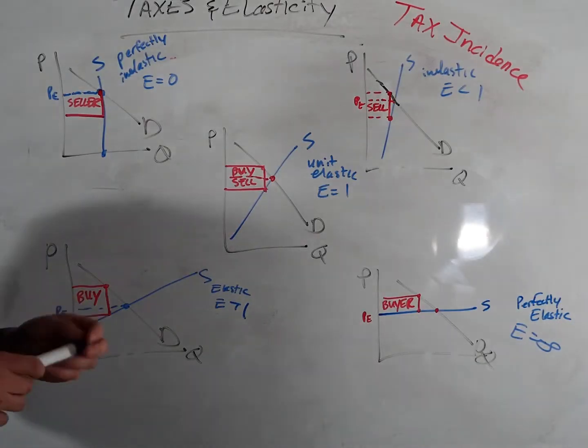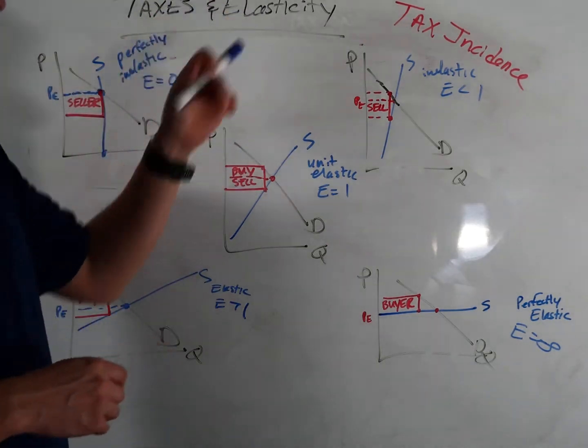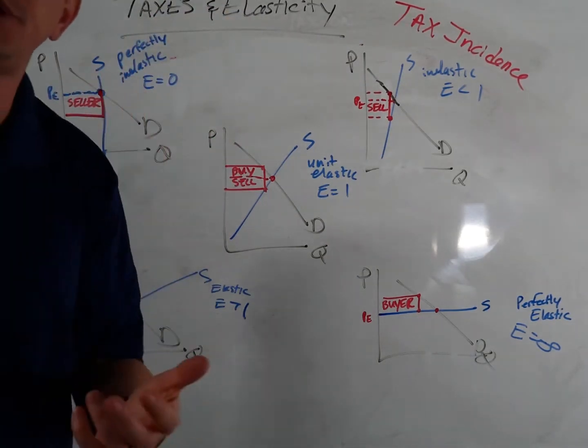Okay, one more time around the bend before we wrap up this chapter on supply, demand, and government policy. Still talking about tax incidence, taxes, and elasticity. This time we're talking about it from a supply perspective.